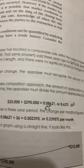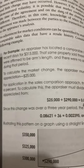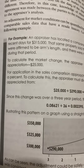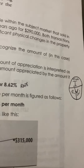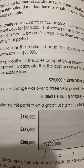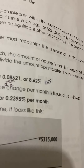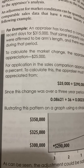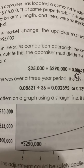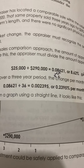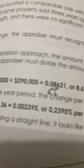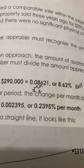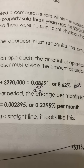To calculate the market change, the appraiser must recognize the amount of appreciation: $25,000. For application in the sales comparison approach, the amount of appreciation is interpreted as a percent. To calculate this, divide the amount appreciated by the amount it appreciated from — $25,000 divided by $290,000 equals 0.08621, or 8.62%, obtained by moving the decimal two places to the right.